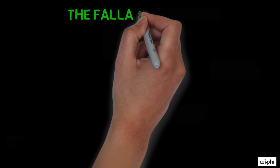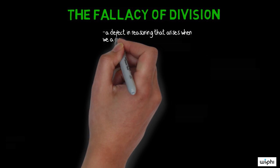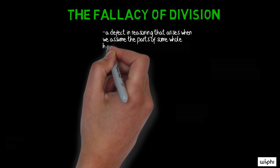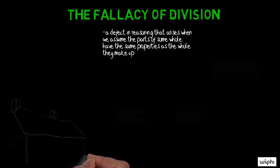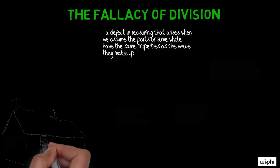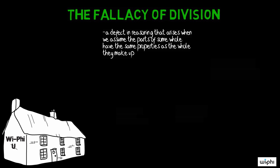The fallacy of division is a defect in reasoning that arises when someone infers that what is true of something must also be true of that thing's parts. So the fallacy is kind of like saying that because a university has some qualities, then all of that university's departments must also have those qualities.